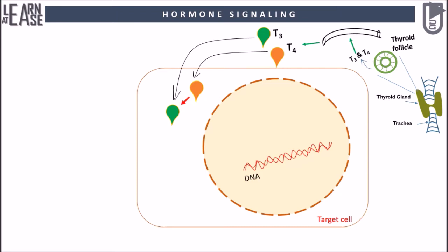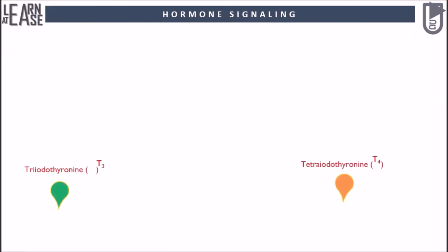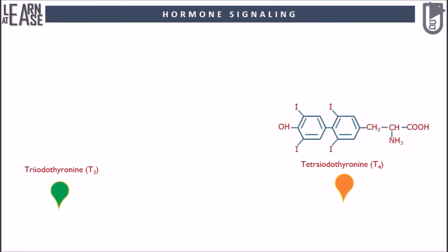This is possible because T3 and T4 are lipophilic and thus they can easily cross the cell membrane. Now, T4 is not the potent thyroid hormone, but T3 is. So T4 will be converted to T3. This process takes place in the cytoplasm.